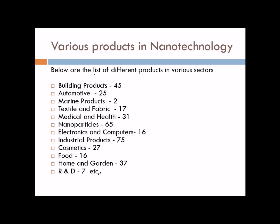Various products of nanotechnology exist. Some examples include building products, automotive, marine products, textile, medical, nanoparticles, electronics and computers, industrial products, cosmetics, food, health, garden, and R&D. You name it and you find nanotechnology everywhere.